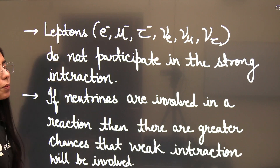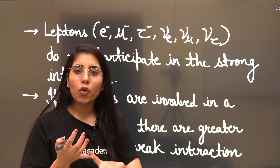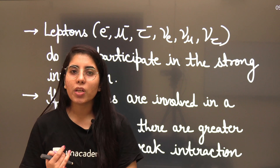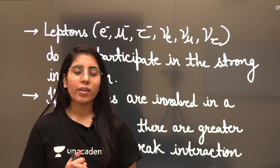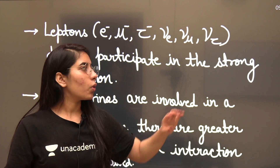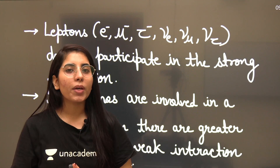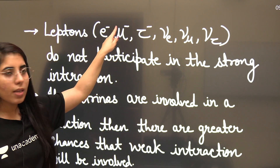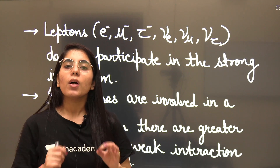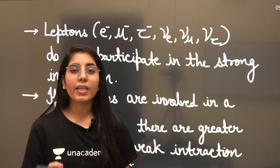The first important point is about leptons. Leptons include the electron, muon, tau, electron neutrino, mu neutrino, and tau neutrino. Their antiparticles also exist — for neutrinos we place a bar over them, and for the charged leptons we change the sign of the charge to show the antiparticle. Leptons do not participate in strong interactions.